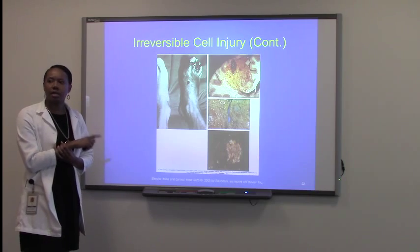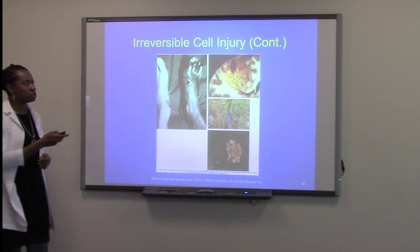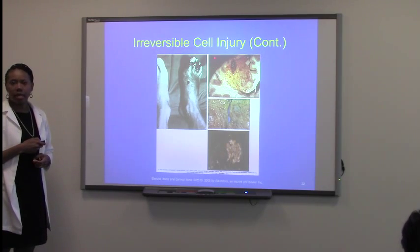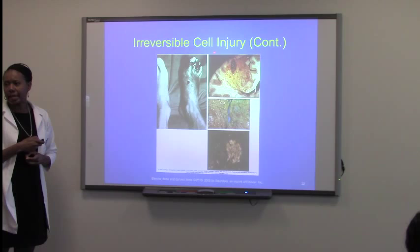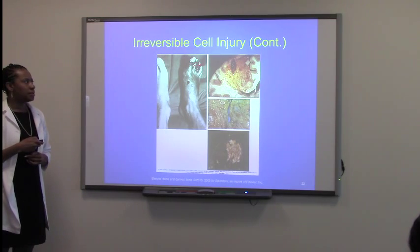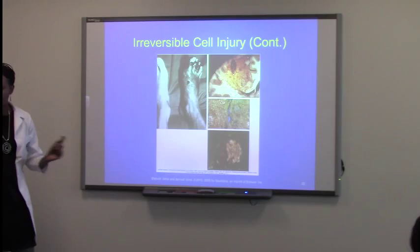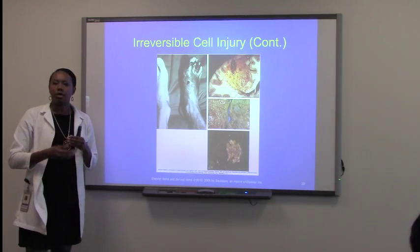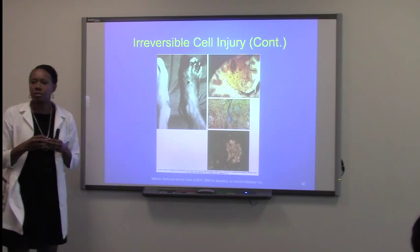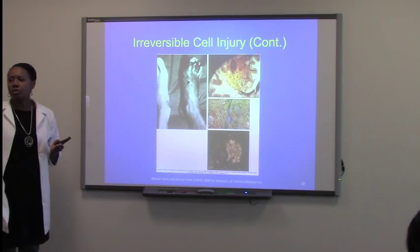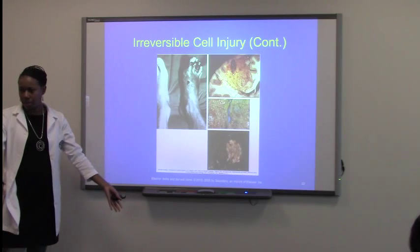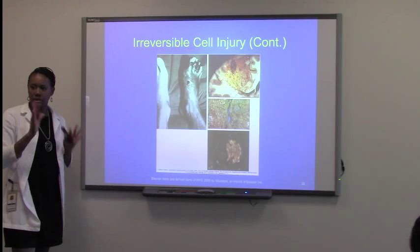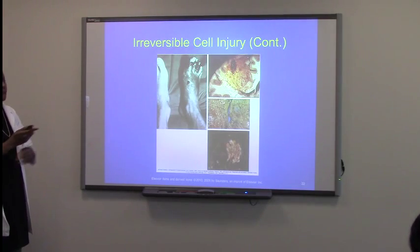I do have these same pictures posted on eCollege under the pathophysiology images. The first picture is coagulative necrosis, also known as dry gangrene. Most of you have probably seen this before — people who go through frostbite or a situation where there's not enough blood supply getting to the extremities. The feet are actually more common than the fingers, but it can happen to both.